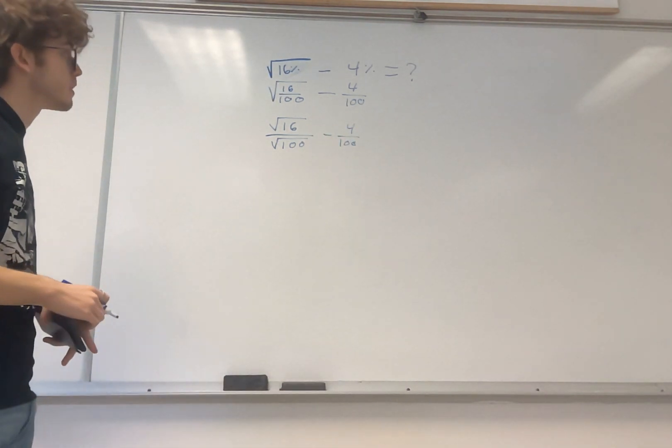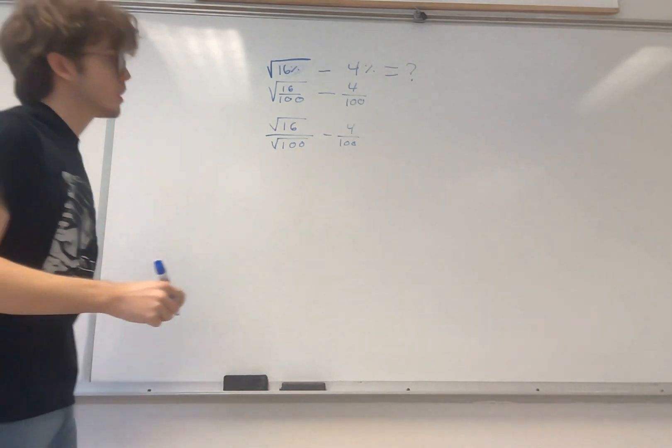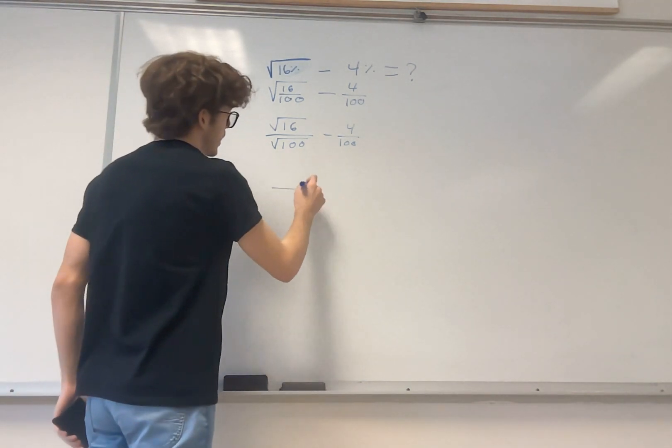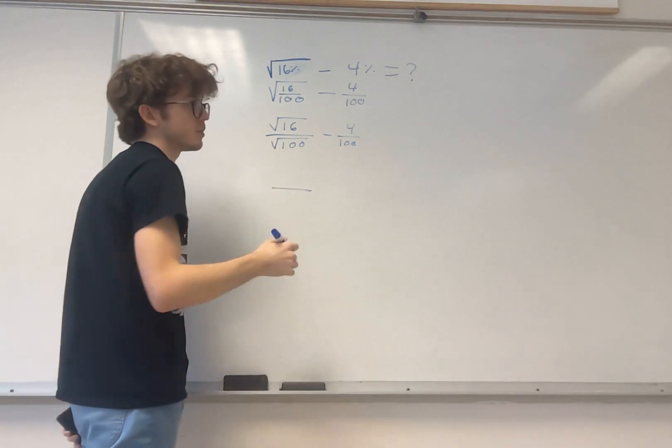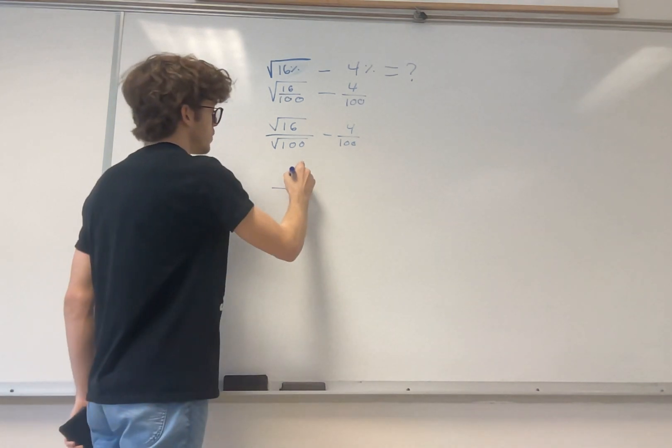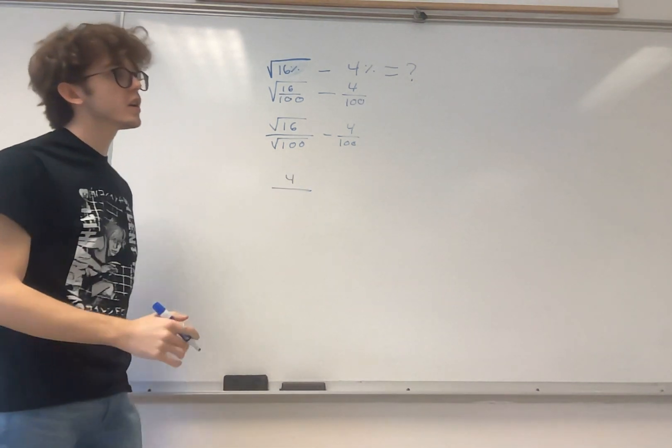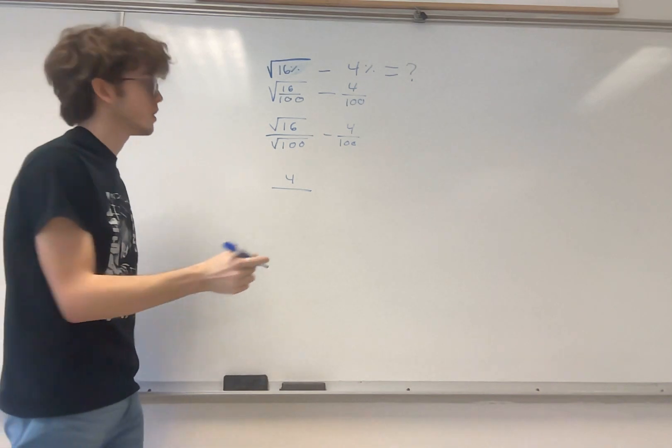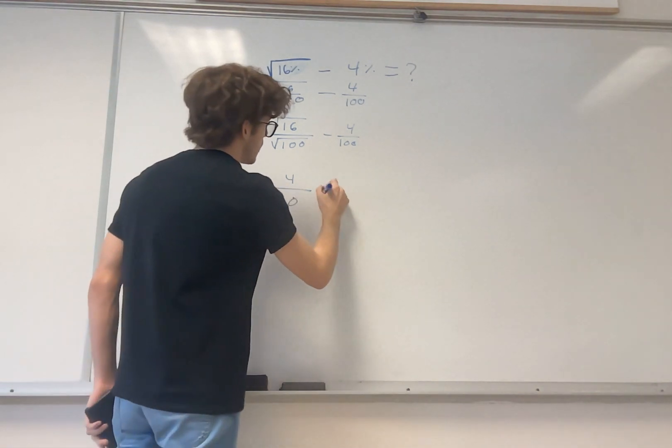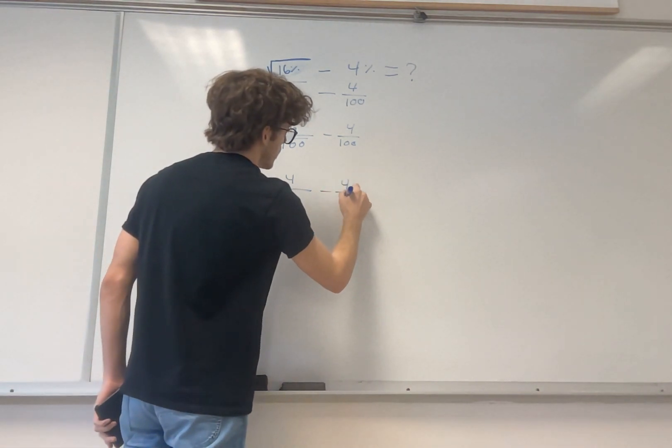So how do we go about this? Square root of 100, and we're just going to write a fraction here. Square root of 16, we'll start with that. We know 4 times 4 is 16, so it's 4 over the square root of 100. 10 times 10 is 100, so the square root of 100 is 10. Minus 4 over 100.